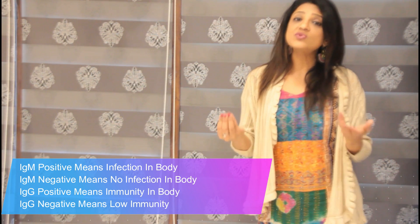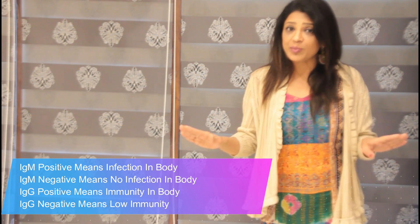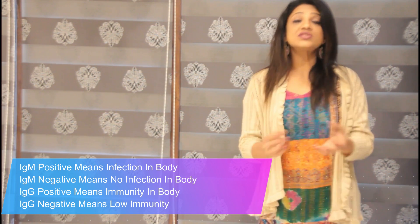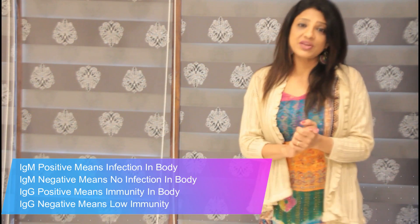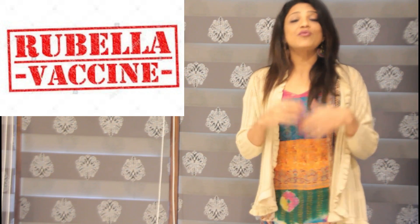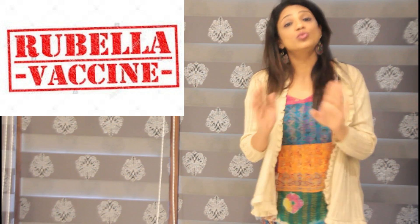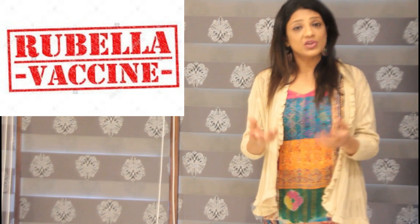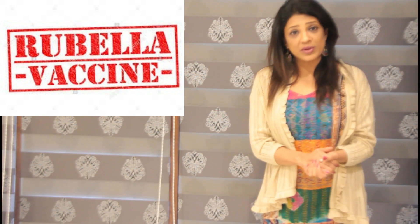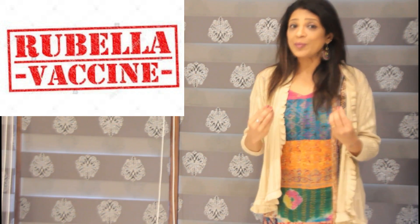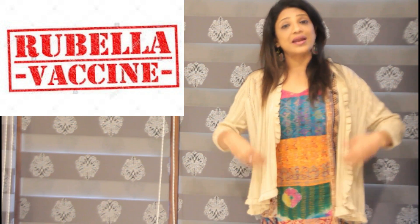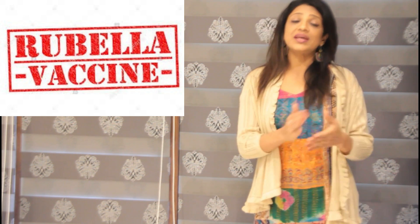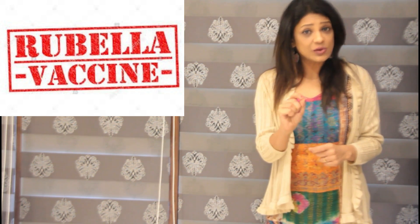If IgM is negative and IgG is positive, your body has already produced immunity towards that infection — you do not need treatment with antibiotics, and you do not need vaccination either, because your body has produced internal antibodies. For example, if you have rubella IgG positive, you do not need a rubella vaccine, because what the vaccine does is give you external immunoglobulins — but your body has already produced them through its memory and is immune to that virus.